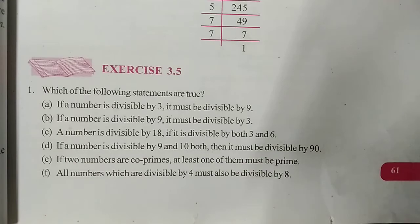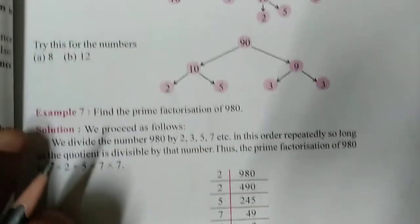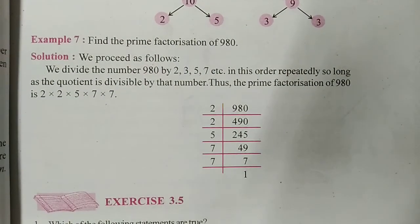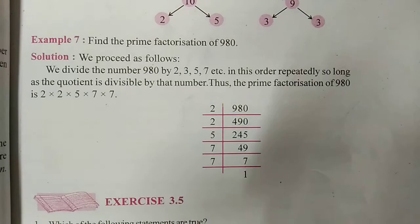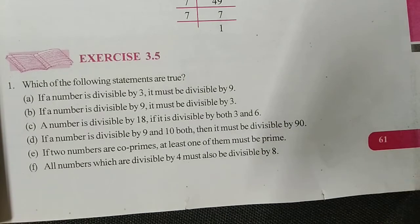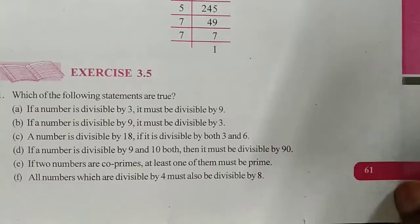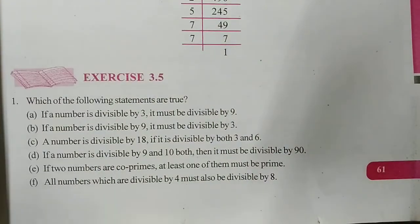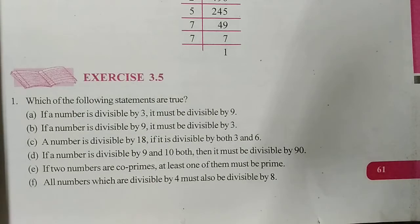The factor tree method was also discussed, and I told you that Example 7 you have to do by yourself at home as homework. But now we are going to discuss directly the exercise portion — Question 1: Which of the following statements are true? Students, you have to write 'true' or 'false' (F) beside each question.